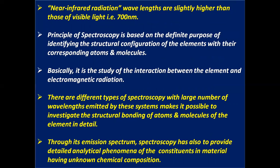The principle of spectroscopy is based on identifying the structural configuration of elements with their corresponding atoms and molecules. Basically, it is the study of the interaction between an element and electromagnetic radiation. There are different types of spectroscopy, with large numbers of wavelengths emitted by these systems, making it possible to investigate the structural bonding of atoms and molecules of an element in detail. Emission spectrum spectroscopy also provides detailed analytical phenomena of the constituents in material having unknown chemical composition.